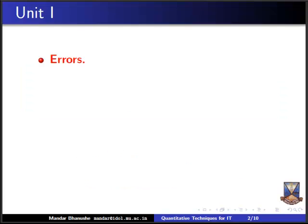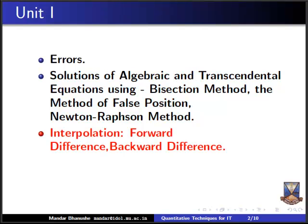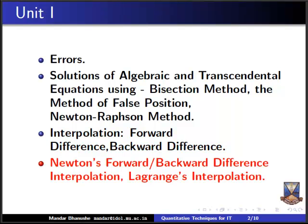In unit one, the first topic is going to cover errors — various types of errors which we make when we count things — including relative errors and percentage errors. Then we are going to discuss solutions of algebraic and transcendental equations using three methods: bisection method, method of false position, and Newton-Raphson method. Then we will cover interpolation, including forward and backward differences, Newton's forward-backward difference interpolation formula, and Lagrange's interpolation formula.